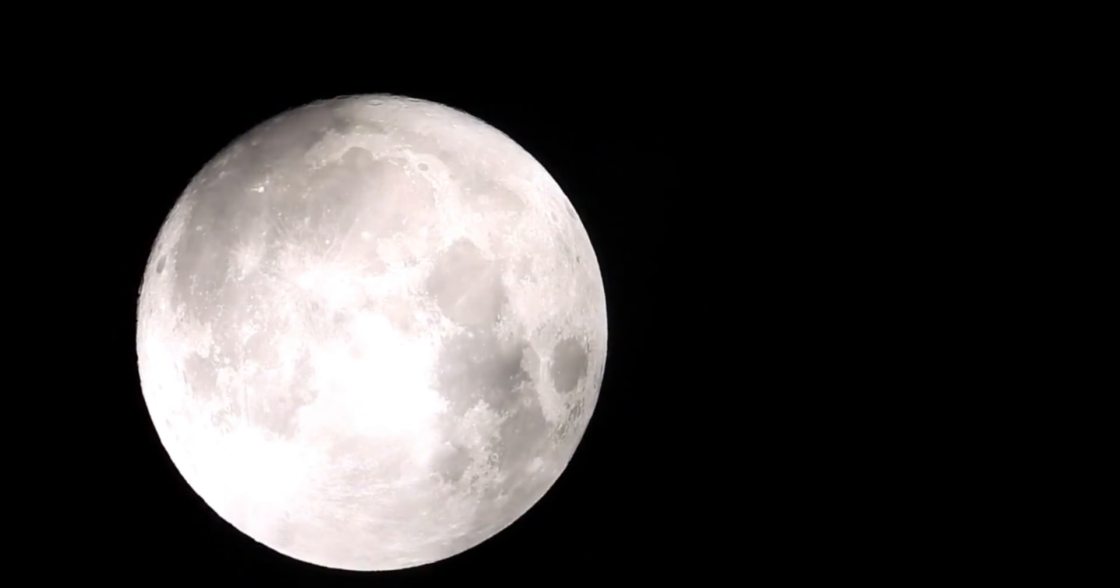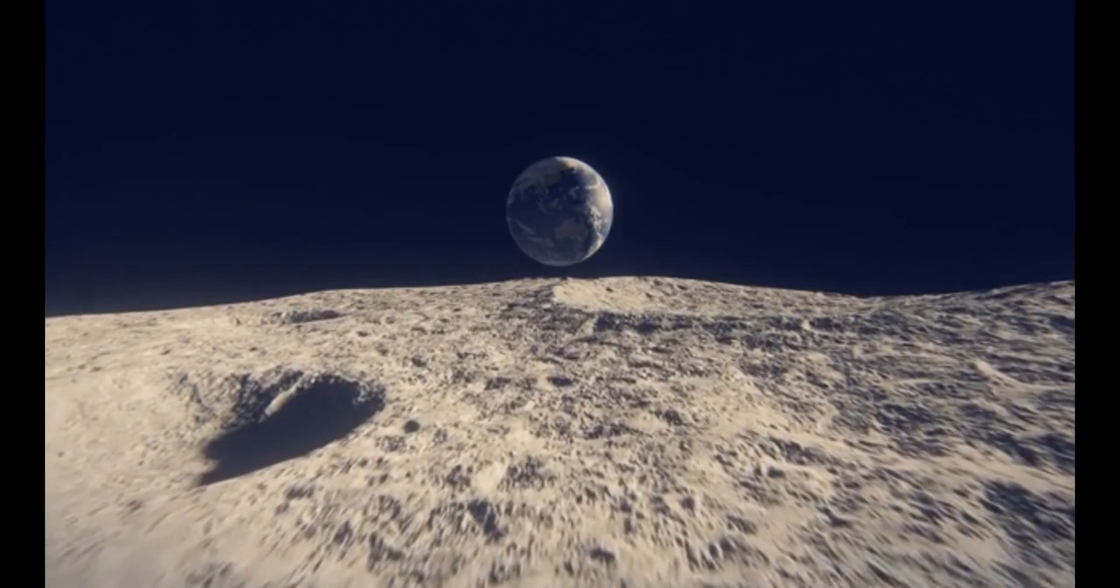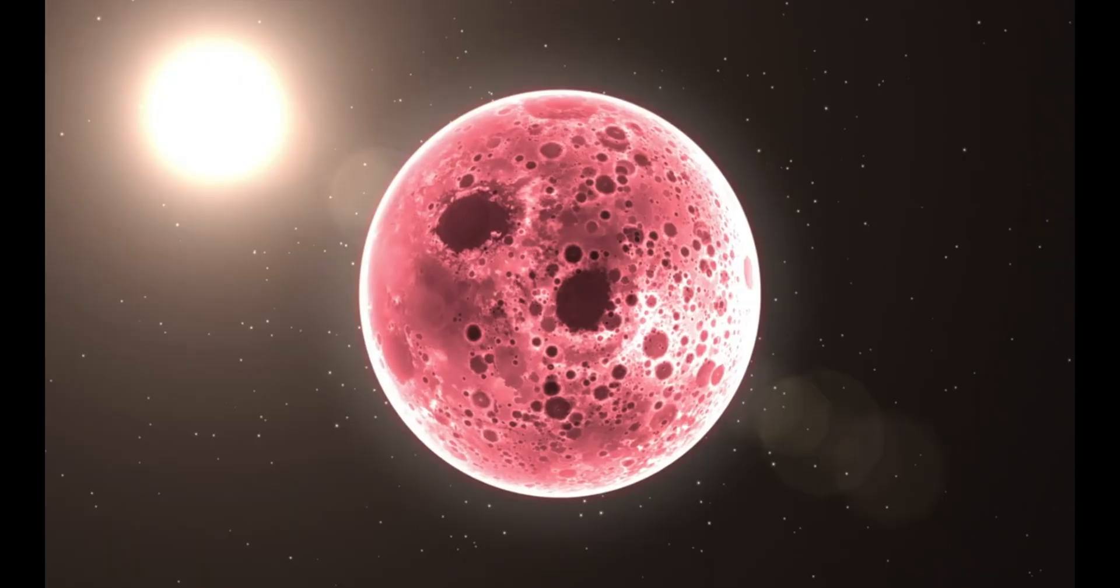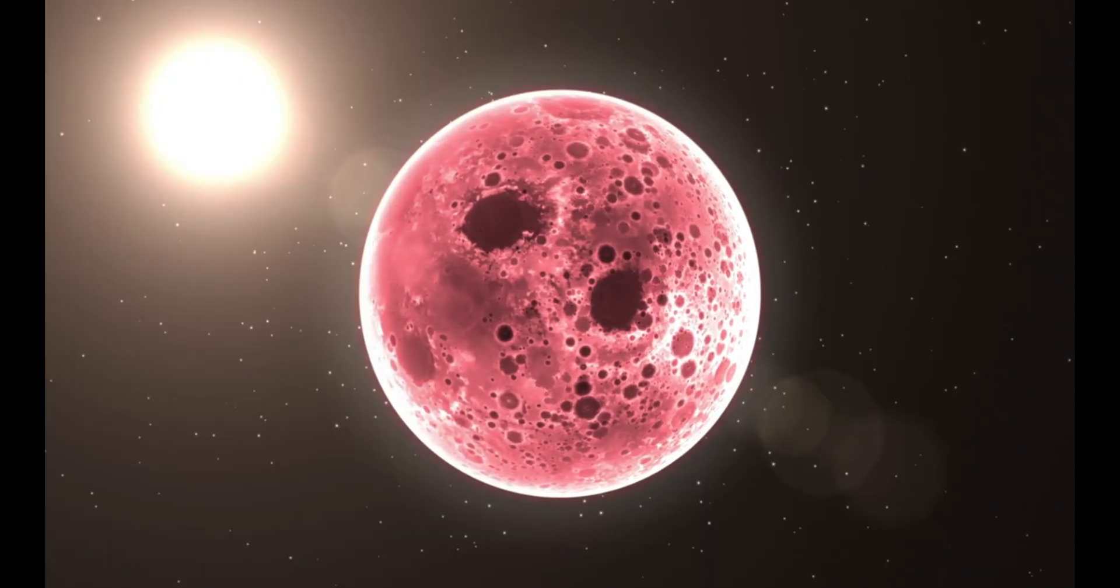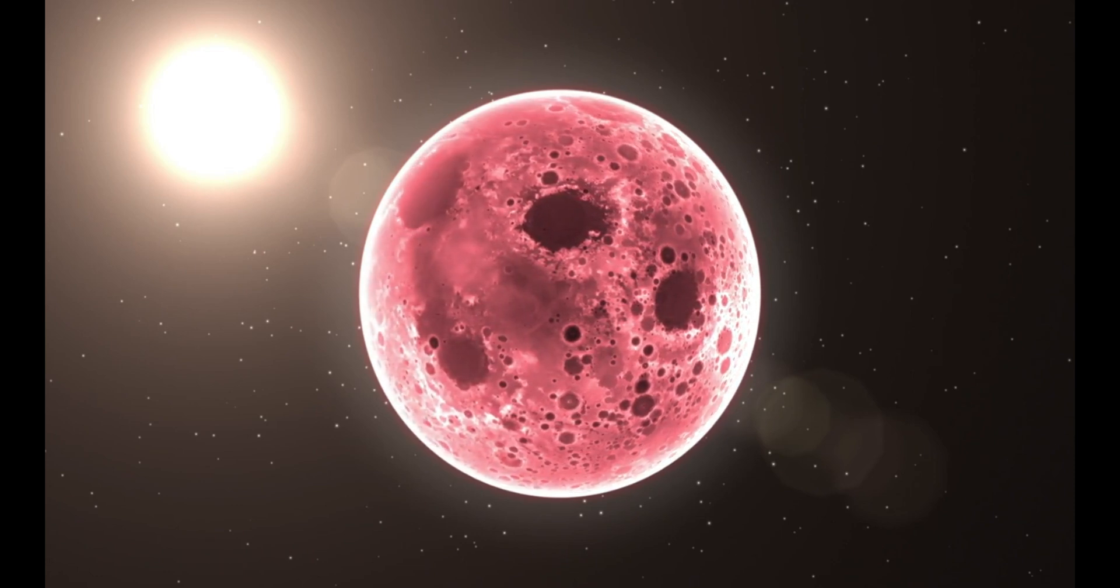One of the challenges in confirming the existence of life on Proxima b is the nature of its parent star. Proxima Centauri is a red dwarf star, much cooler and smaller than our sun, but it is also highly active, producing frequent and powerful solar flares.